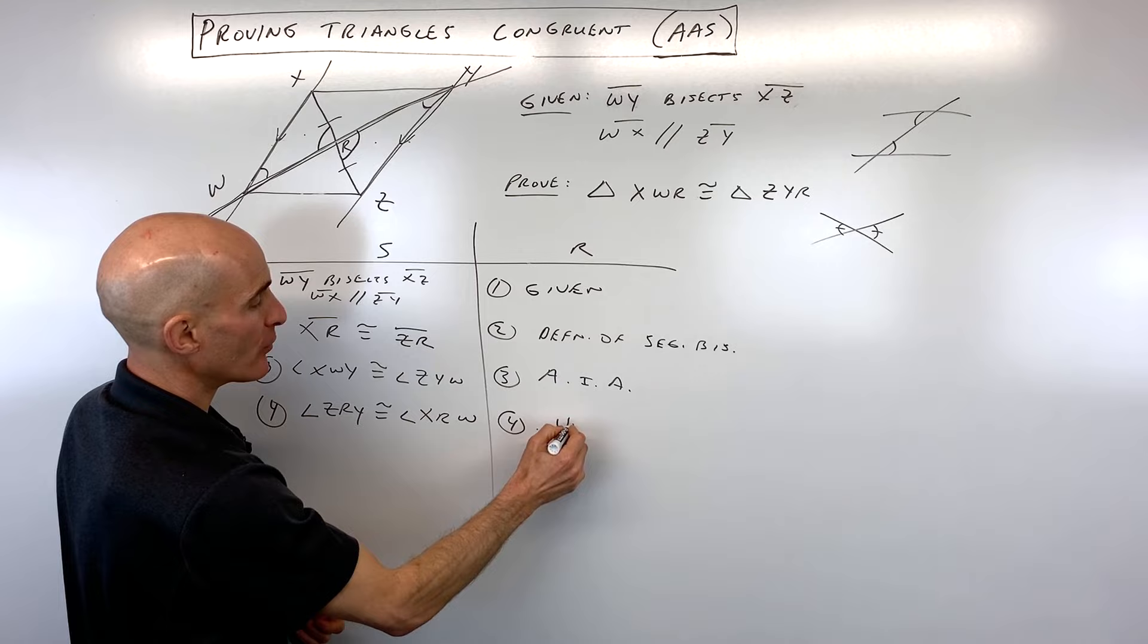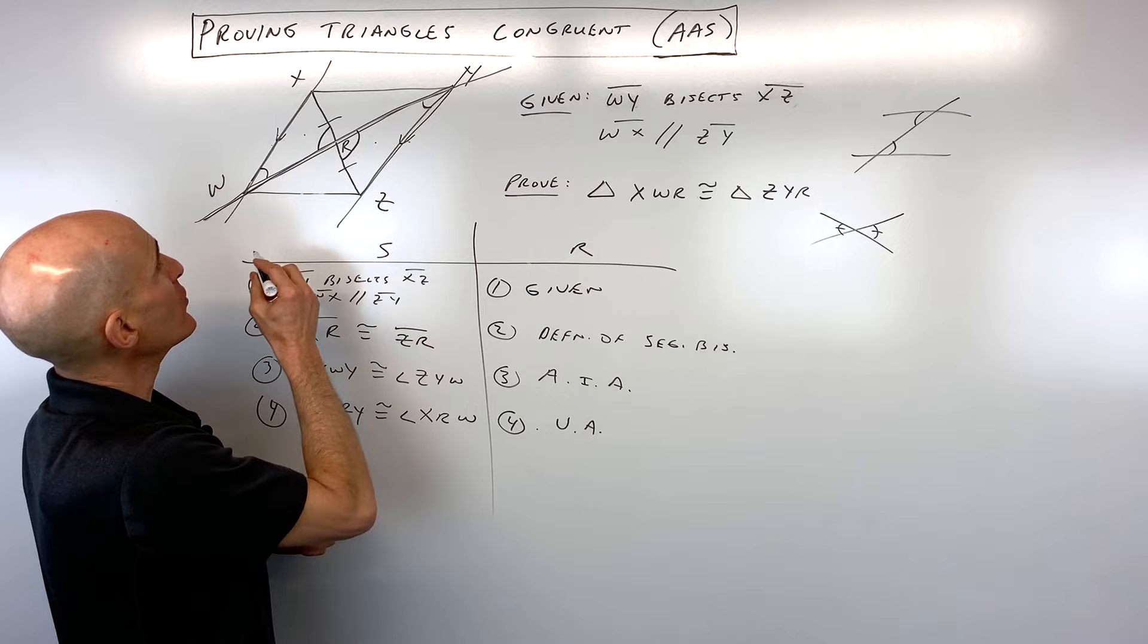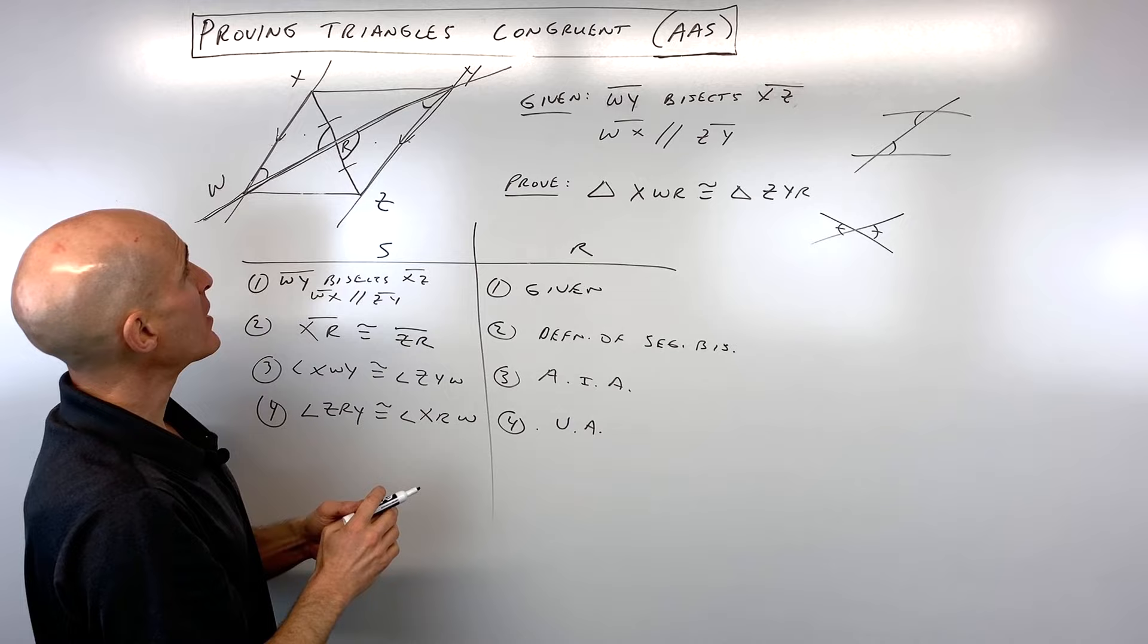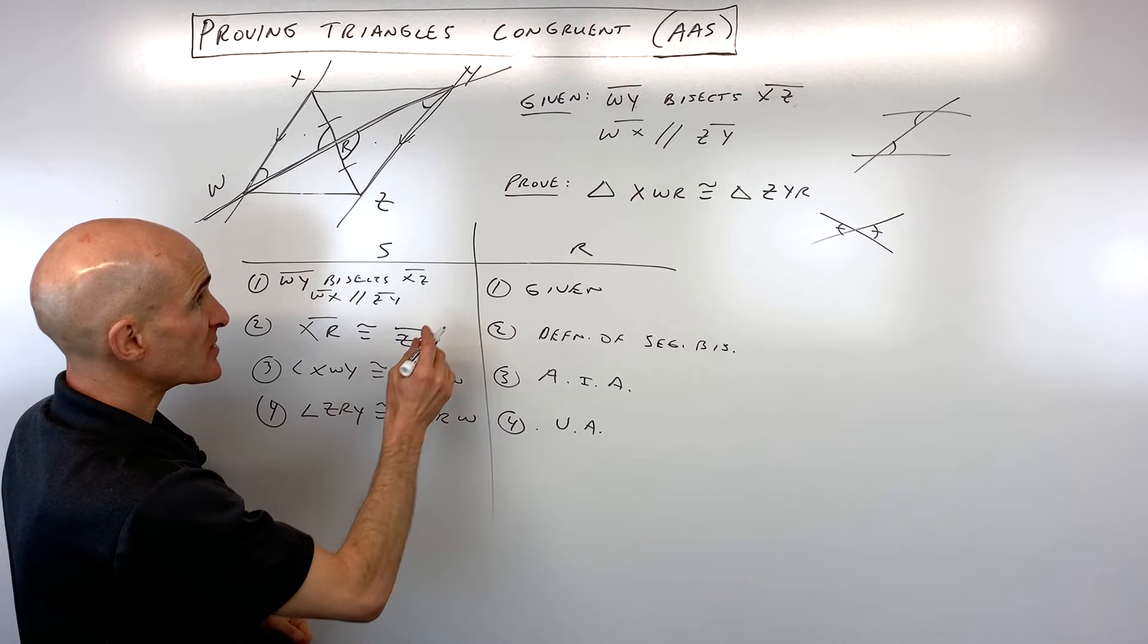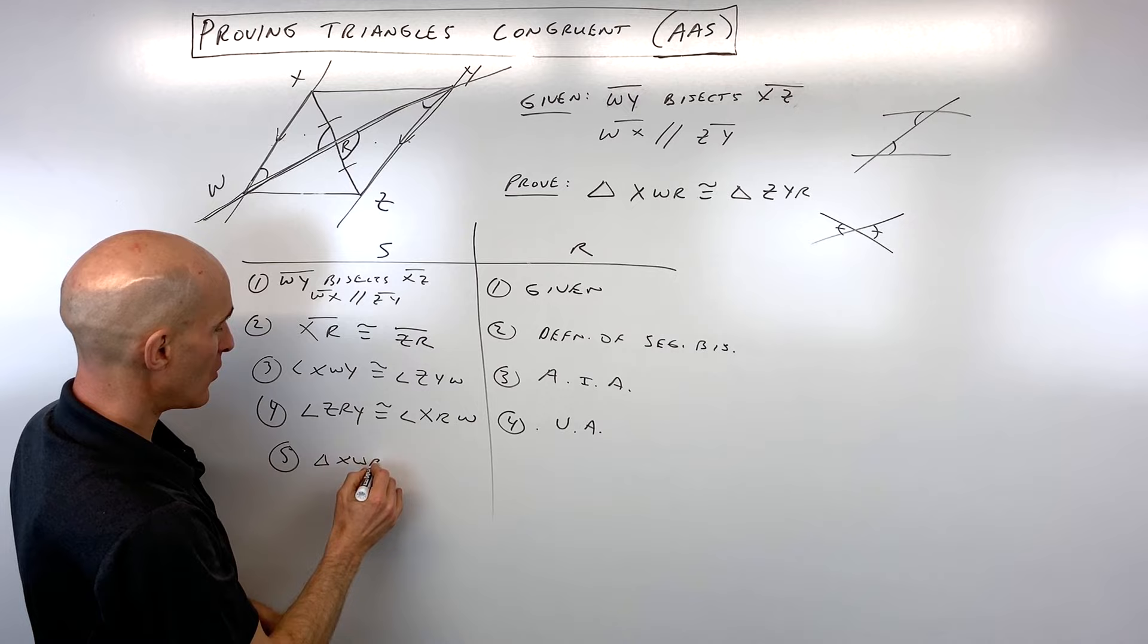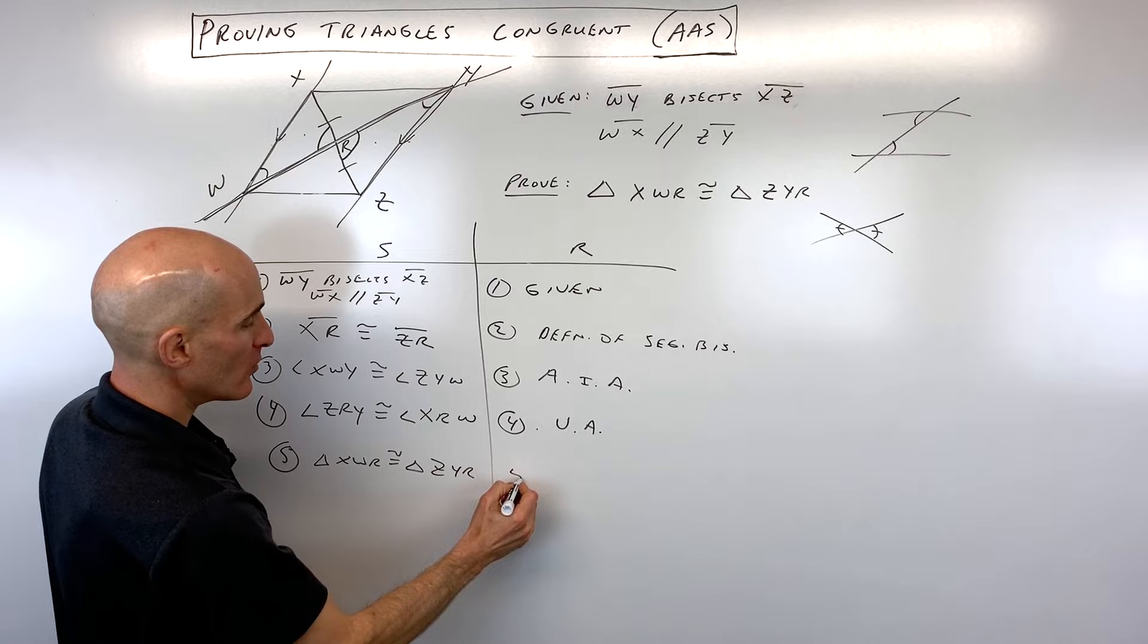Now, it looks like we have enough to prove the two triangles are congruent now using the angle, angle, side. Now, when you write your triangle congruence statement, you want to make sure that the corresponding vertices match up, the corresponding angles, the corresponding sides, etc. But what we're trying to prove here, that's always going to be your last step in your proof. So step number five, triangle XWR is congruent to triangle ZYR. And that's going to be by angle, angle, side.